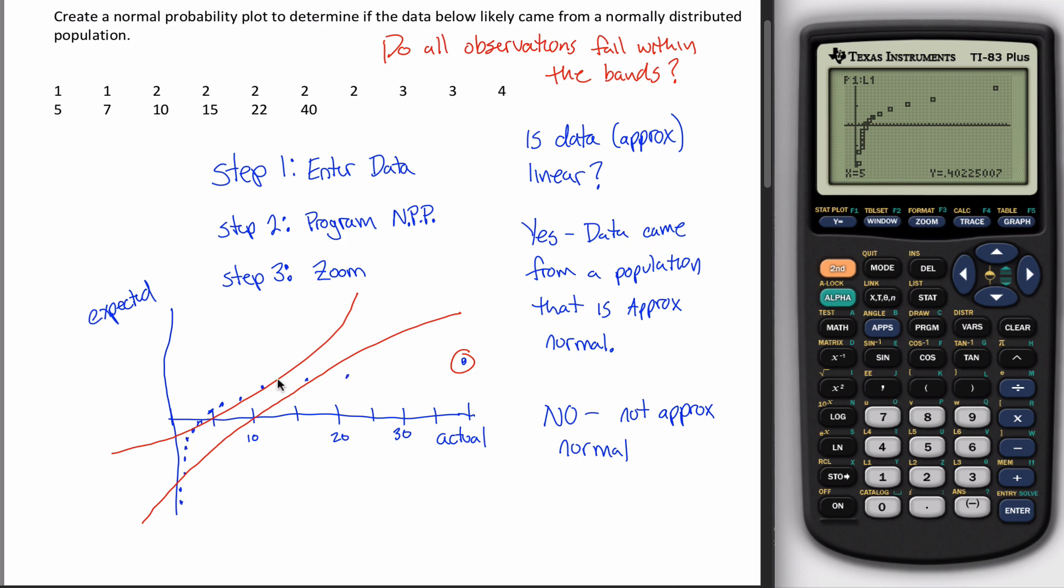Why are there dots that made their way out of these bands? Because they don't line up in a straight line. If the dots were in a straight line, more or less, they'd all be inside of these bands. Your question is probably, how do you create the bands? You don't, which is a bummer, at least not in our class.